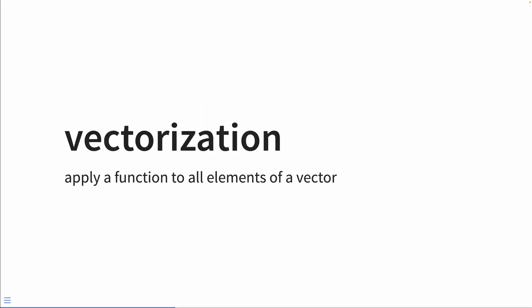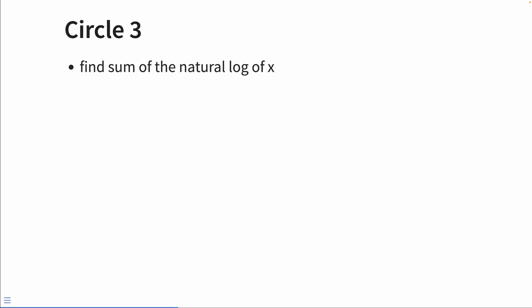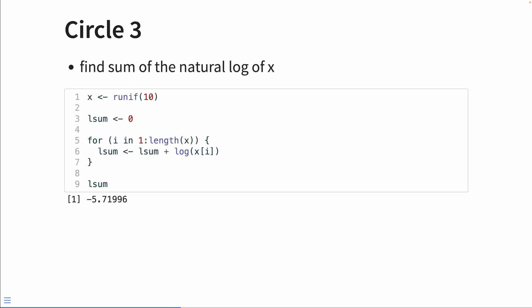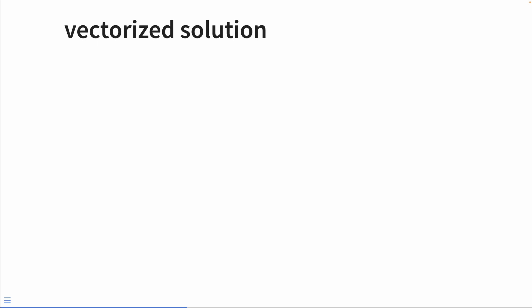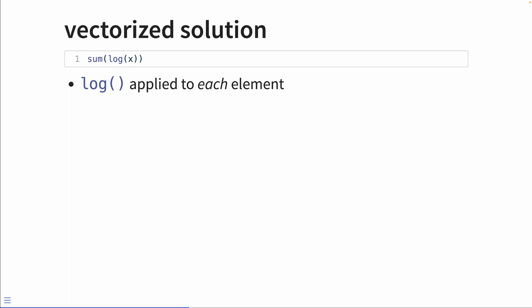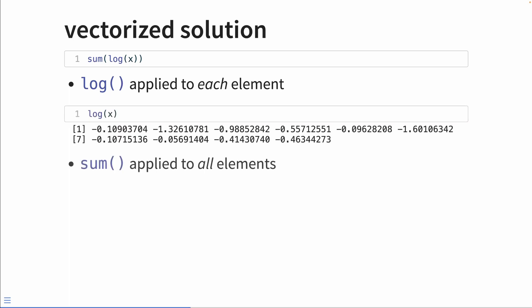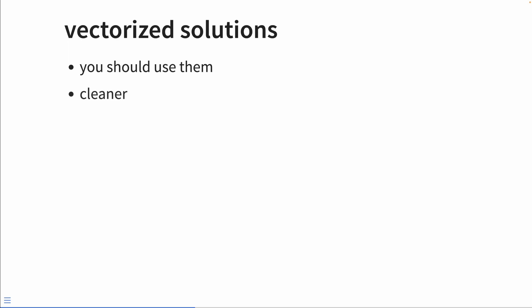Vectorized functions take a vector and operate on the whole thing at once. The objective: take the natural log of each element and then sum them up. The for loop version calculates log(x[i]) and adds it to the lsum object, which grows until the list ends. As Patrick Burns said: no. We should be letting R do the legwork. This can be rewritten as a one-liner: sum(log(x)). The functions log and sum are both vectorized — log does something to each element, whereas sum is applied to all elements at once. You should always look for vectorized solutions: they are clearer, they are faster, and since they're faster, they're more effective.